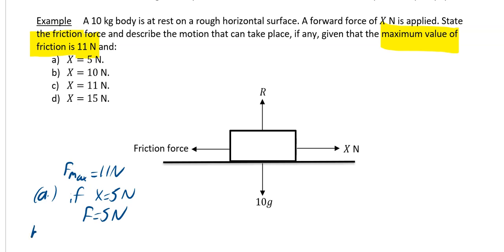For part B, similar sort of question. If X is equal to 10, now we have to think what happens then. If X is equal to 10, again 10 is less than your maximum value of friction.